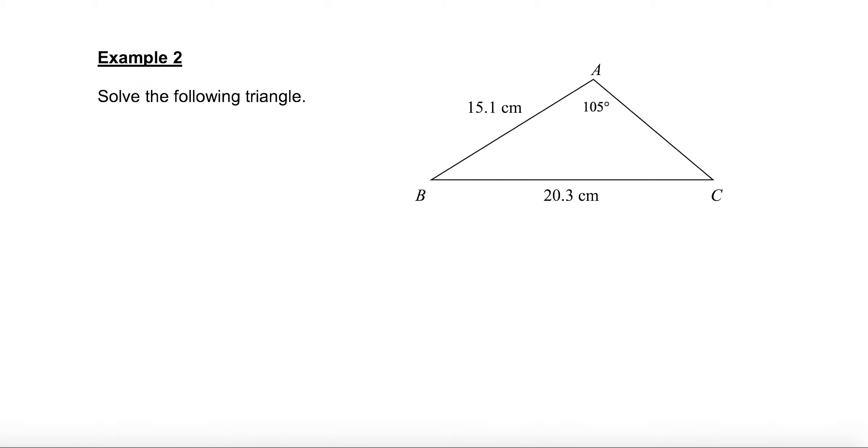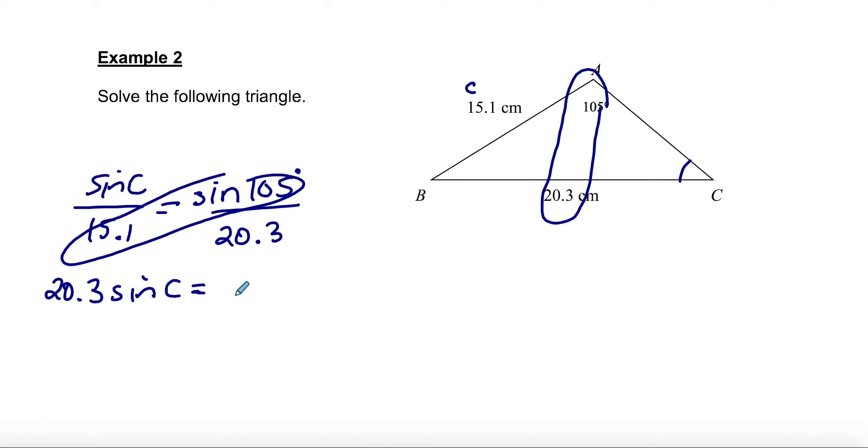Example 2 is a little bit different. This time we're only given one angle and an opposite side. I think because we have side C over here, a good angle to find first would be angle C. We're going to do sine of C over 15.1 equals, now I have this partner here, sine of 105 over 20.3. When I cross multiply, sine of C times 20.3, I can cross multiply this way: sine of 105 times 15.1 is 14.5855.